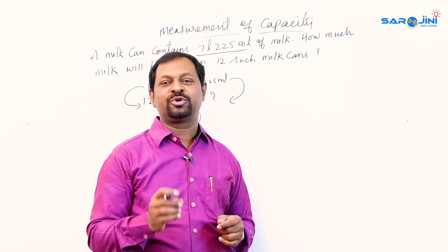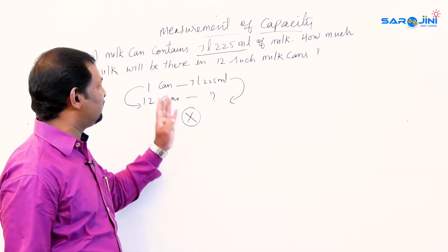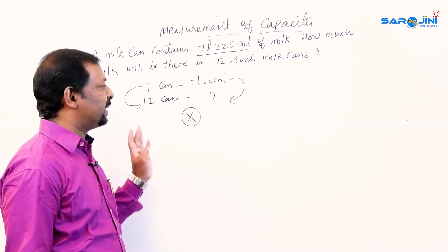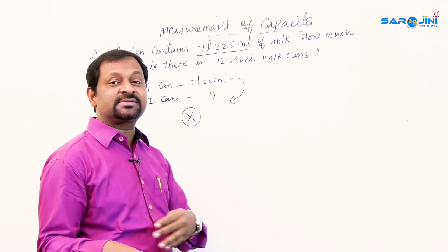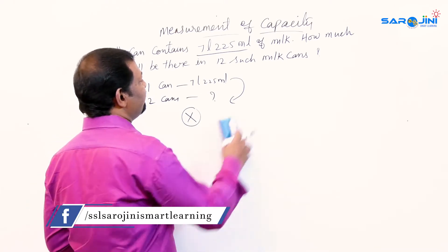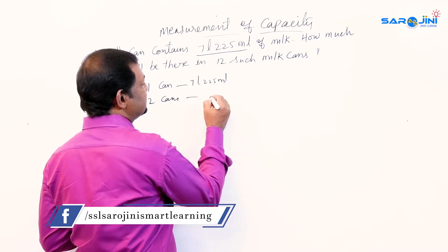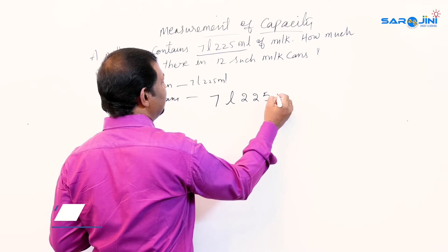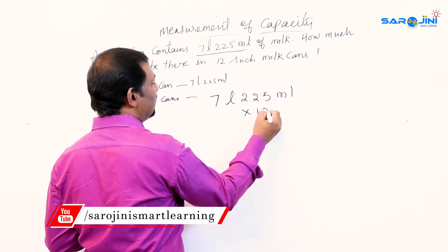Whenever we want to find out for more things, we multiply. If we want to find out for fewer things, we do division. This is the basic step to follow. So here 7 liters 225 milliliters is multiplied by 12, because there are 12 cans.